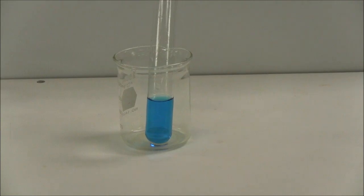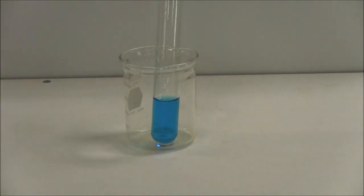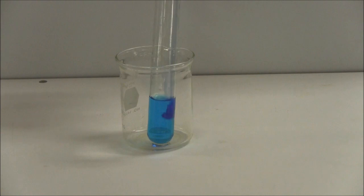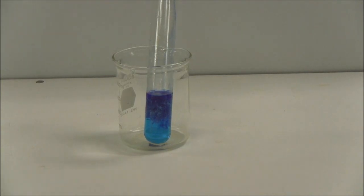So this is copper 2 plus ions surrounded by six water molecules. The water molecules are ligands. And now I'm going to try to replace the water molecule ligands with ammonia molecule ligands. So as I pour it in, you can see there's a beautiful color change there. So the light blue is the hexahydrate, and the dark blue, well to some extent, some of the water molecules have been replaced by ammonia.